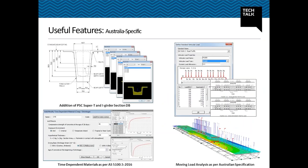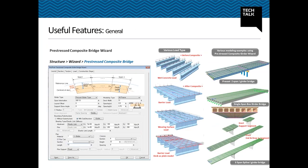MIDASIT has recently developed a number of useful features for Australian engineers. Super-T and Super-I girders are provided as database sections, which are among the most popular sections in Australia. Time-dependent material properties and creep and shrinkage calculations can be provided as per AS 5100 code, as well as moving load analysis. There are many other useful features such as the bridge wizard function. Everything in MIDASIT can be modeled with the manual method; however, the wizard function is provided for user convenience.